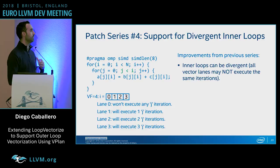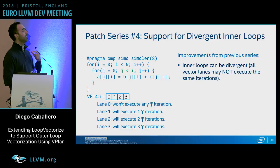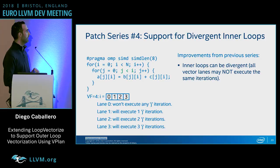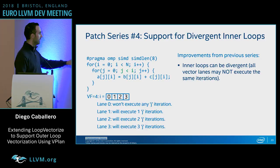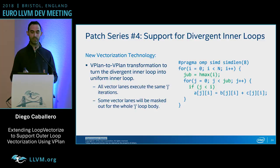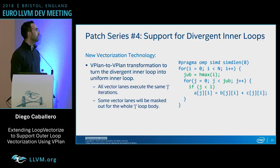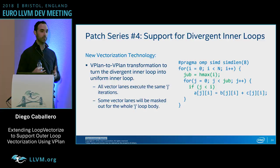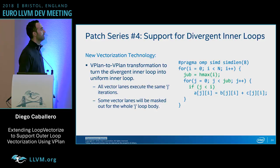Patch series four introduces support for outer loops with divergent inner loops — inner loops where all vector lanes of the outer loop may not execute the same iterations, such as a triangular loop. Assuming VF equals four, each lane executes a different number of inner loop iterations. We introduce a vPlan-to-vPlan transformation that turns the divergent inner loop into a uniform inner loop, so all lanes execute the same iterations and those that shouldn't execute the body are masked out.